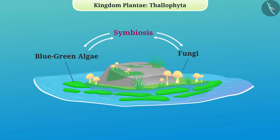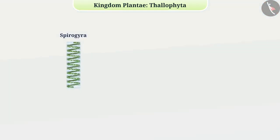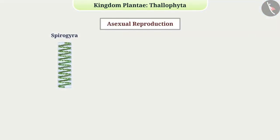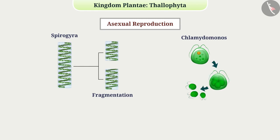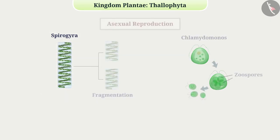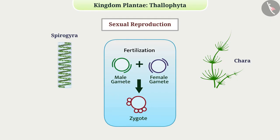Thallophytes have various methods of reproduction. In Spirogyra, asexual reproduction occurs by fragmentation. In Chlamydomonas, asexual reproduction results from the origin of various spores called zoospores. In Spirogyra, Chara, etc., sexual reproduction occurs by fertilization of gametes.